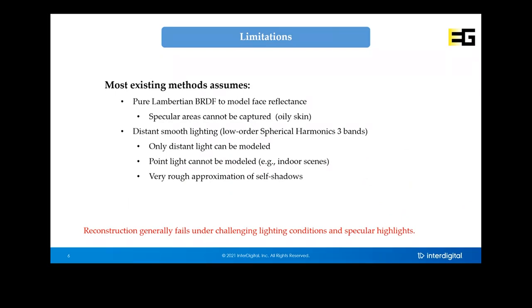However, these monocular-based approaches have some limitations we experienced when working on the Cats movie. Most existing monocular methods assume a pure Lambertian BRDF to model face skin reflectance, meaning oily skin or specular highlights cannot be modeled and may degrade tracking, as we experienced in FaceLab. Additionally, the lighting model is based on low-order spherical harmonics, so only distant lights can be modeled, and under heavy shadows, reconstruction and tracking may fail.